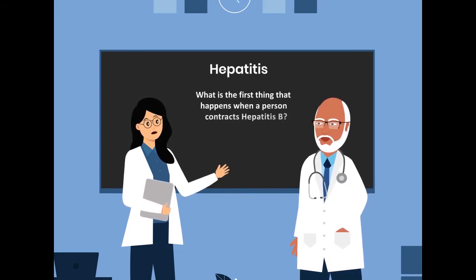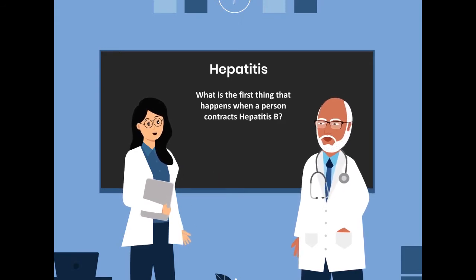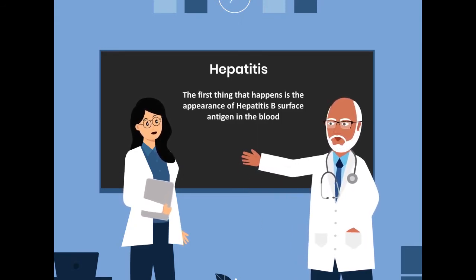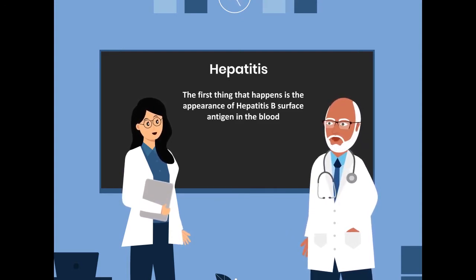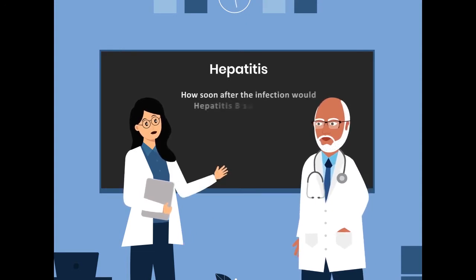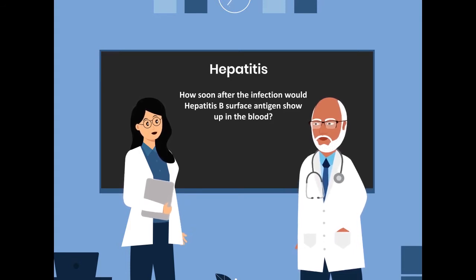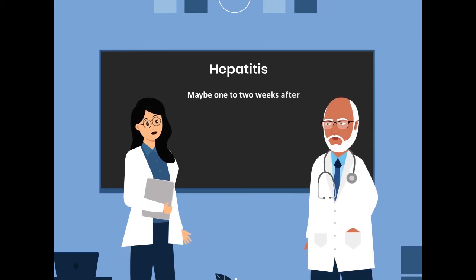What is the first thing that happens when a person contracts Hepatitis B? The first thing that happens is the appearance of Hepatitis B surface antigen in the blood. How soon after the infection would Hepatitis B surface antigen show up in the blood? Maybe one to two weeks after.